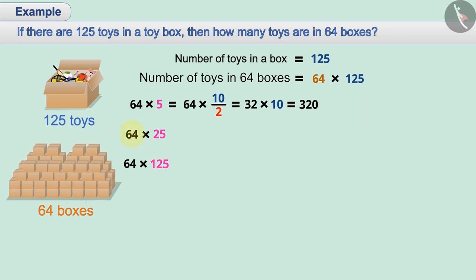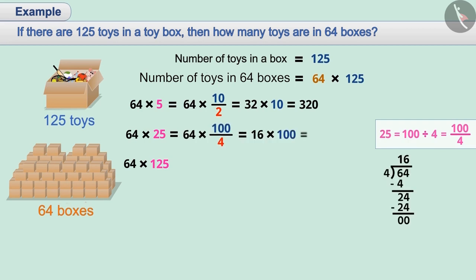Similarly, in order to solve 64 multiplied by 25, we can replace 25 by 100 by 4 and solve it very easily. By solving this, we get 1600.